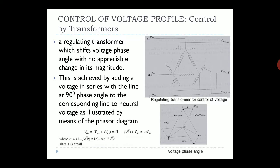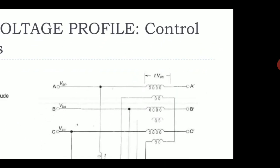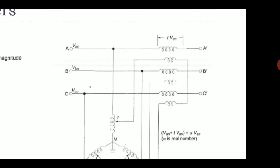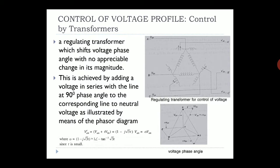Now we will see the voltage angle control. A regulating transformer which shifts the voltage phase angle does so with no appreciable change in its magnitude. This is achieved by adding a voltage in series with the line at a 90-degree phase angle relative to the corresponding line-to-neutral voltage, as can be seen in the phasor diagram.